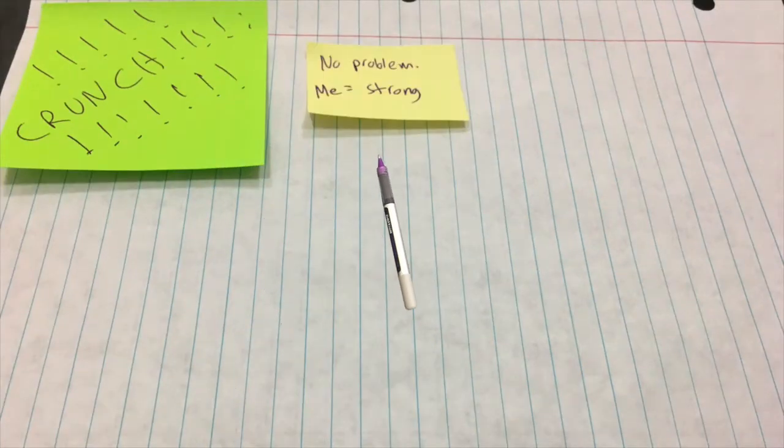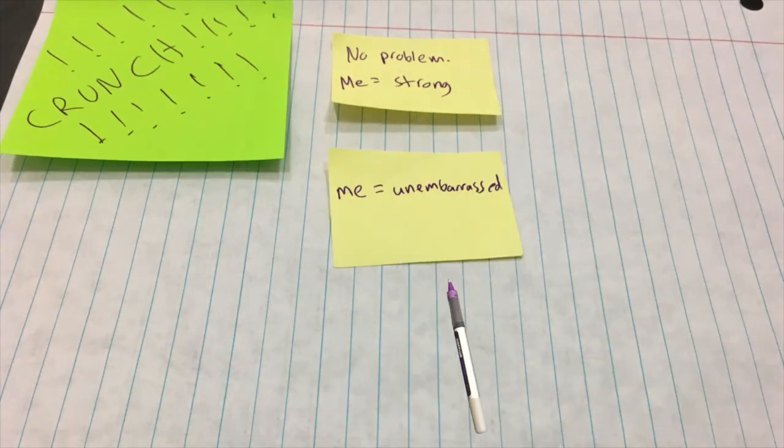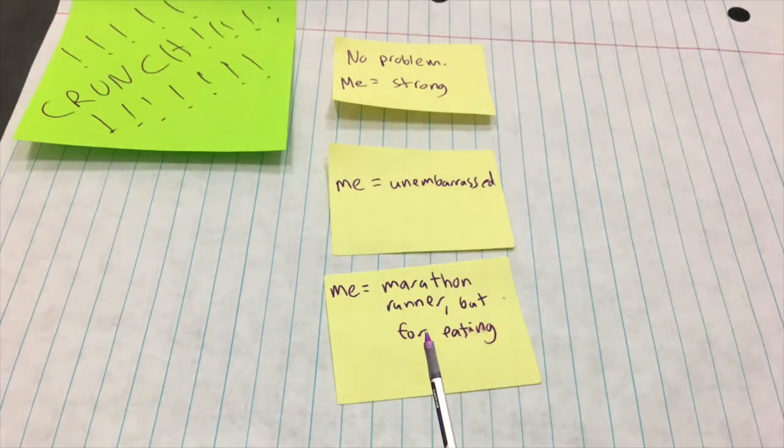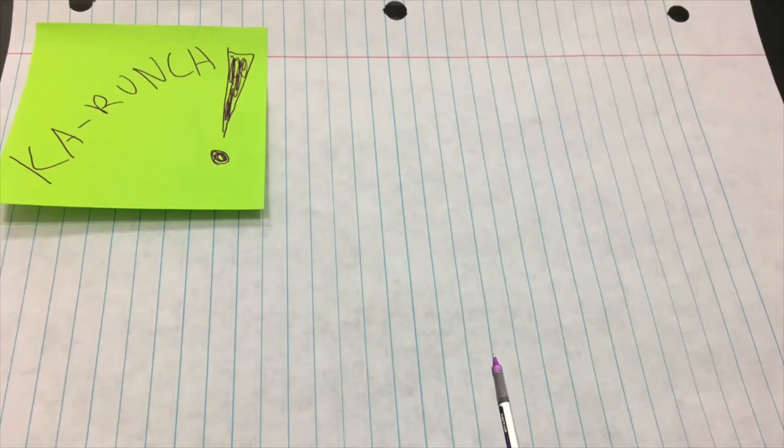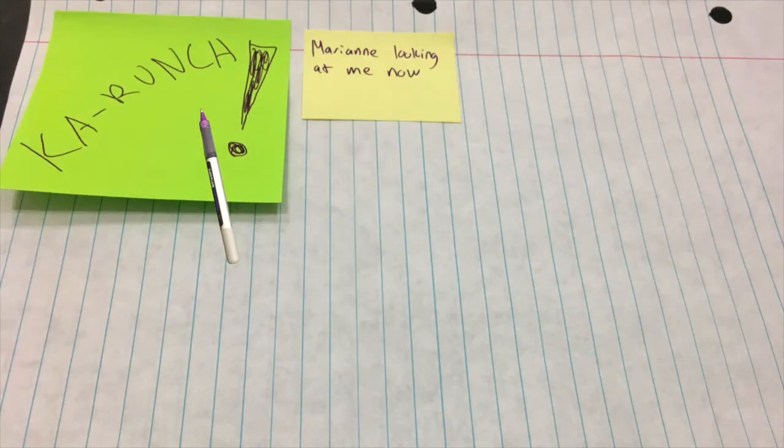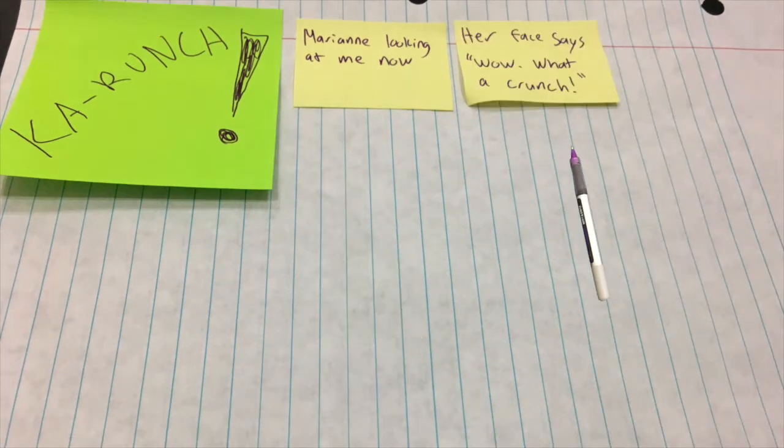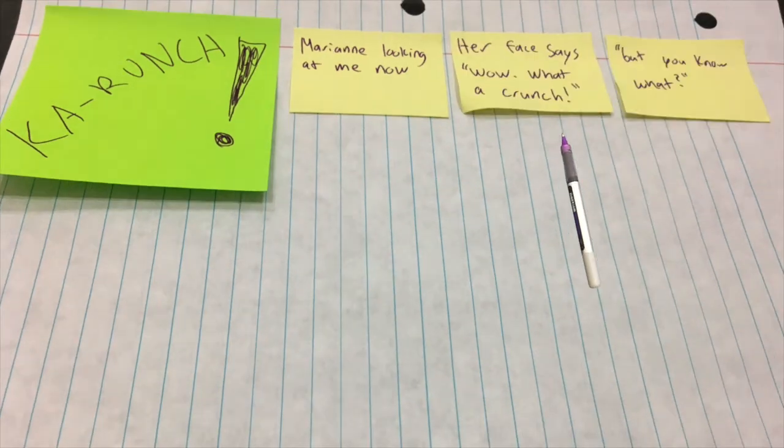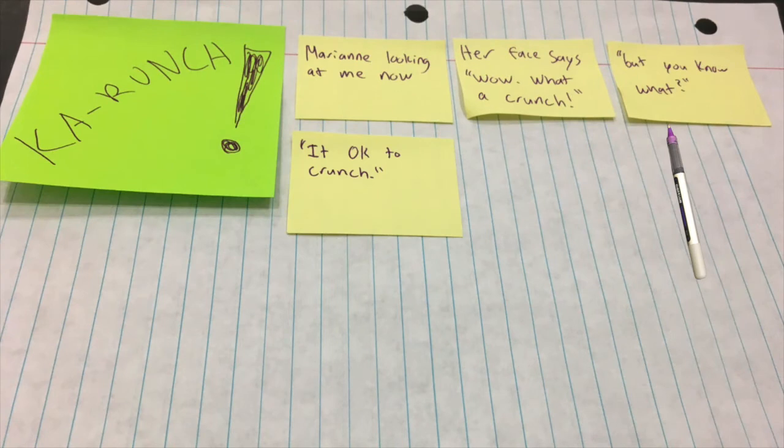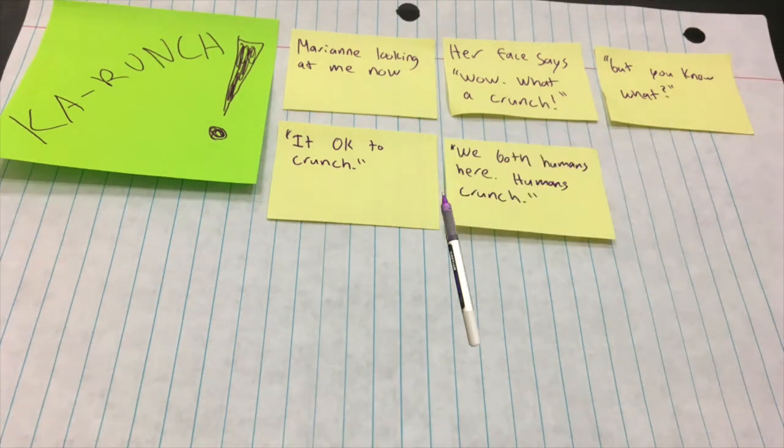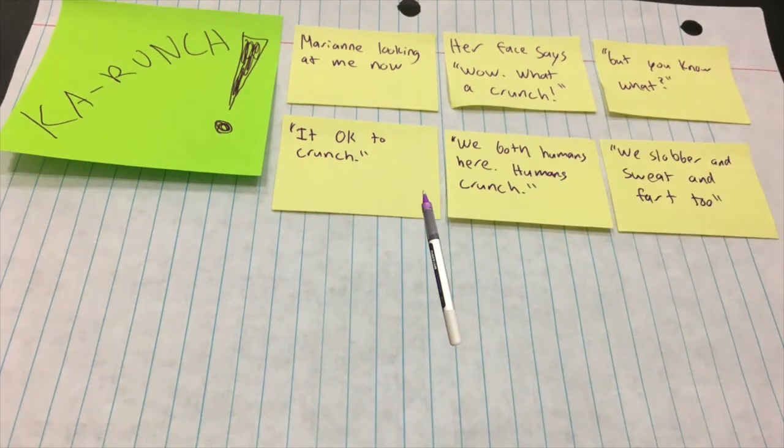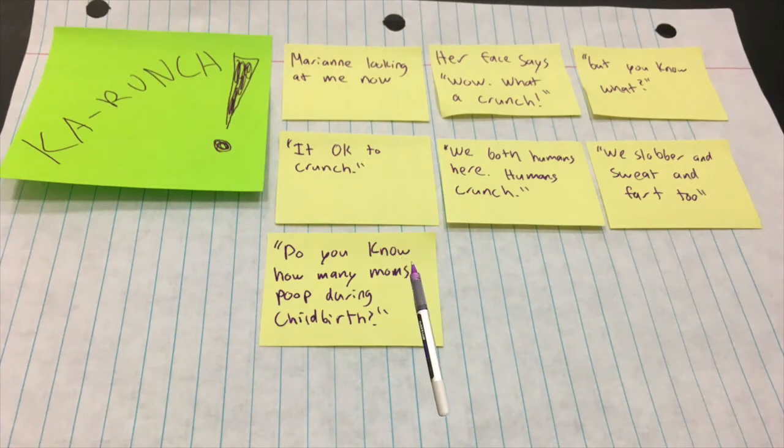No problem. Me equals strong. Me equals understand. Me equals marathon runner. But for eating. Me equals Iron Man. Car-run-ch. Mar-run- Looking at me now. It's so weird. Okay. Her face is, wow, what a crunch. Crunch. But you know what? It okay to crunch. We both humans here. Humans crunch. We slobber and sweat and fart too. Do you know how many moms poop during childbirth?